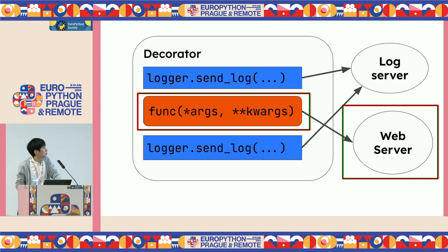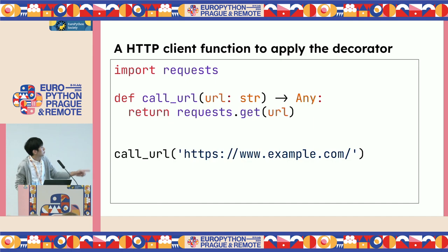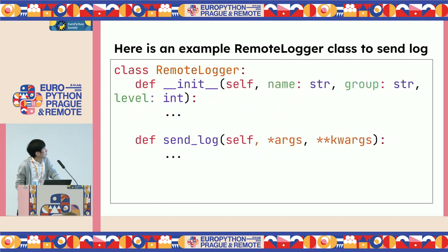Call the function — maybe get, patch, or post. After that, send the log again. This is the simple HTTP call function: import requests, define call_url with a URL string argument, call requests.get, and return the response. Here is the example RemoteLogger class — it's a dummy class. The constructor takes name, log group, and log level. It has a send_log method which expects a structure that logs by args and keyword args. Instantiate the logger with name 'test', log group 'admin', log level 0, then call send_log with message='hello' and user_id=1. This sends a JSON object to the server.